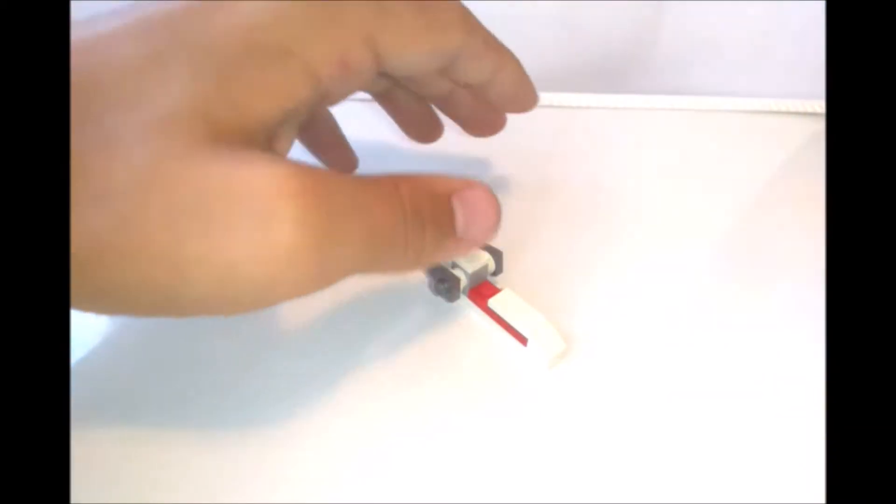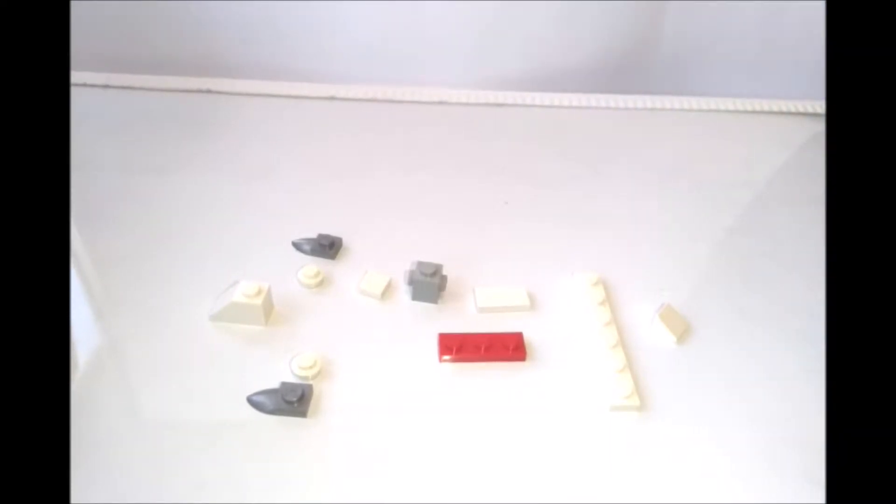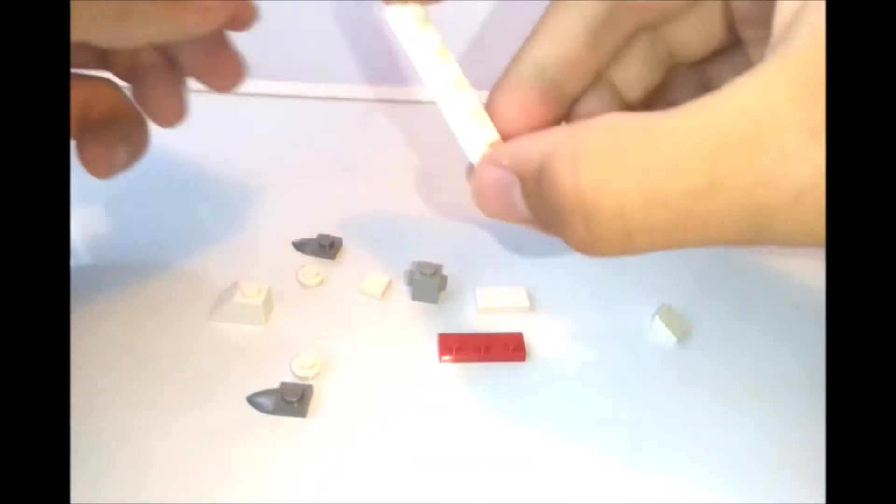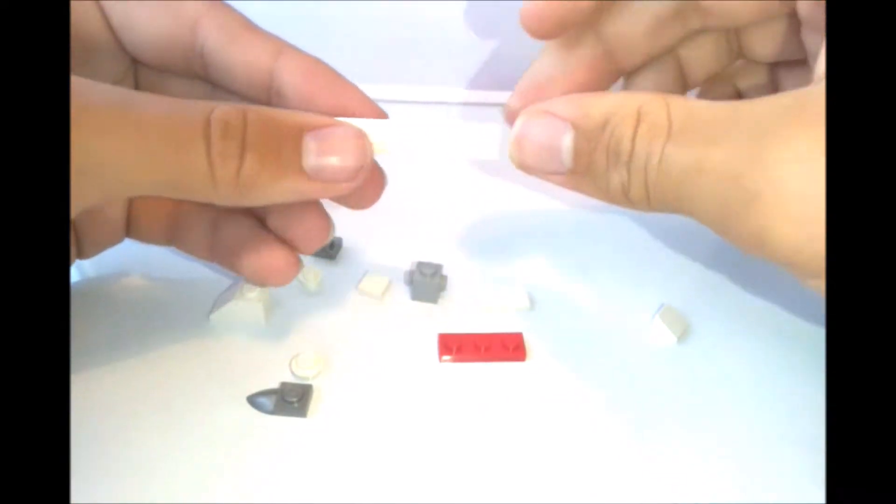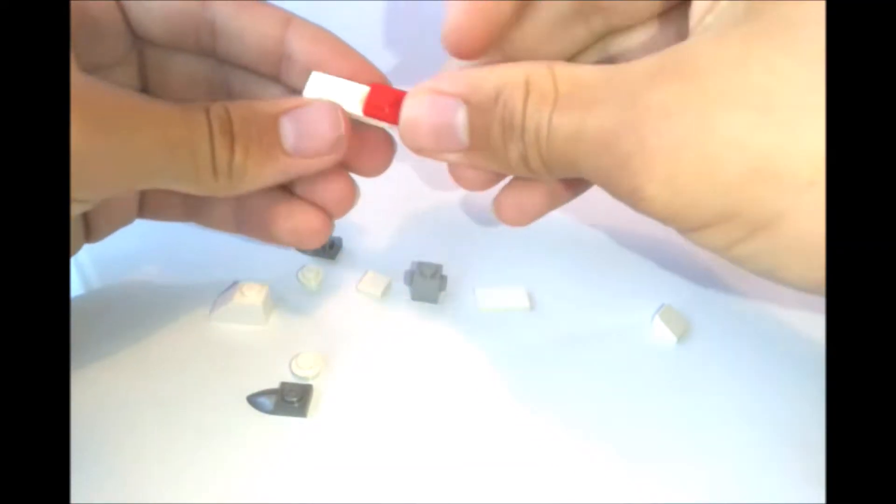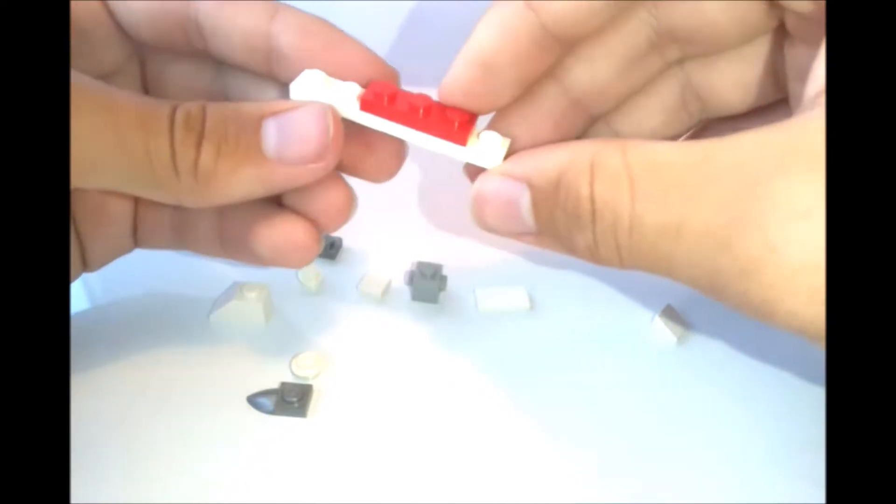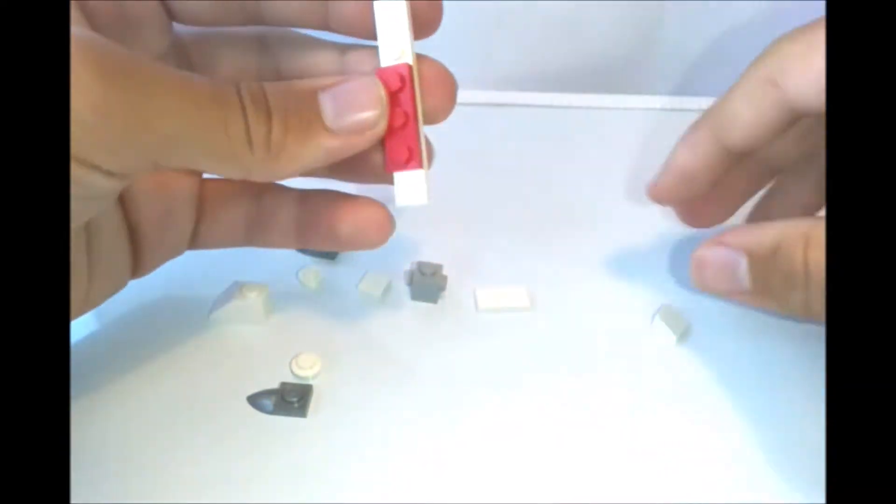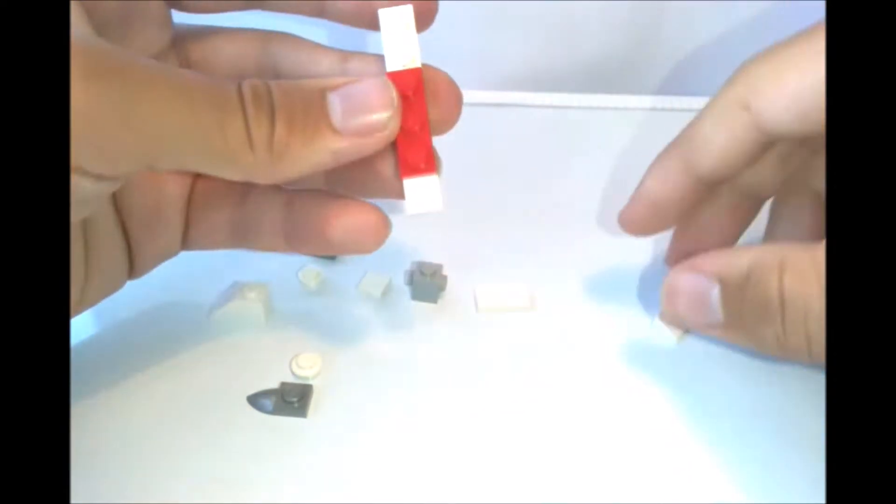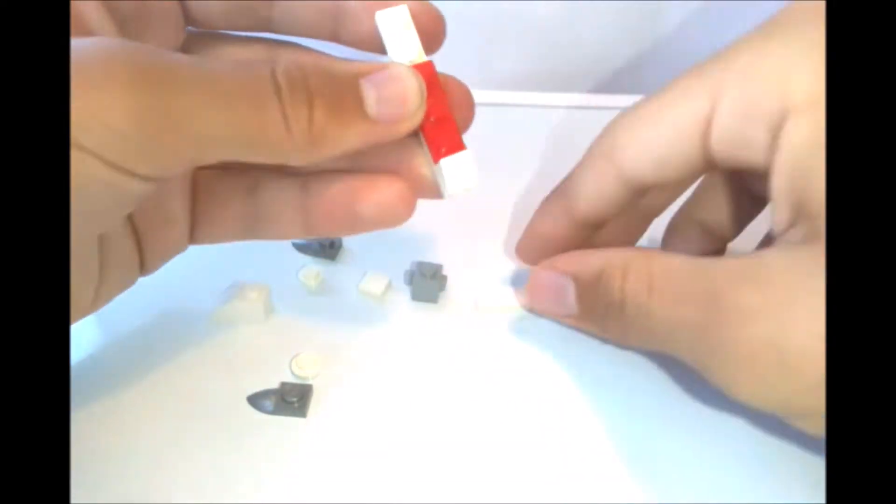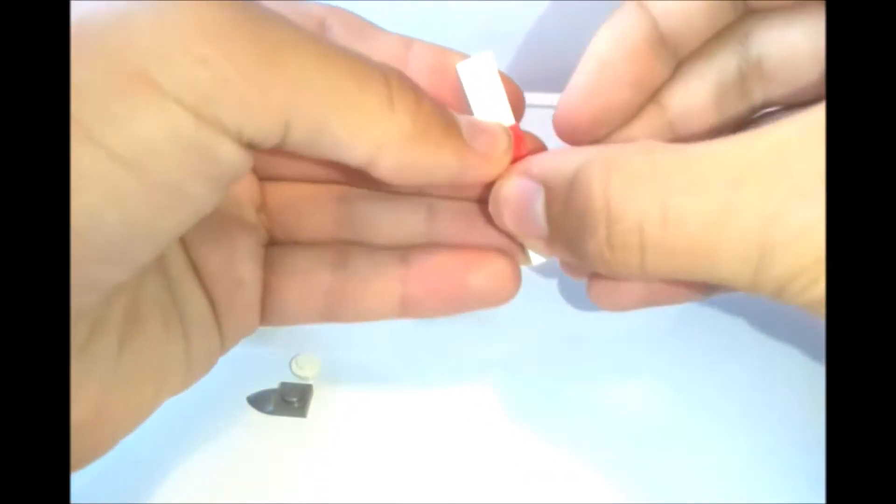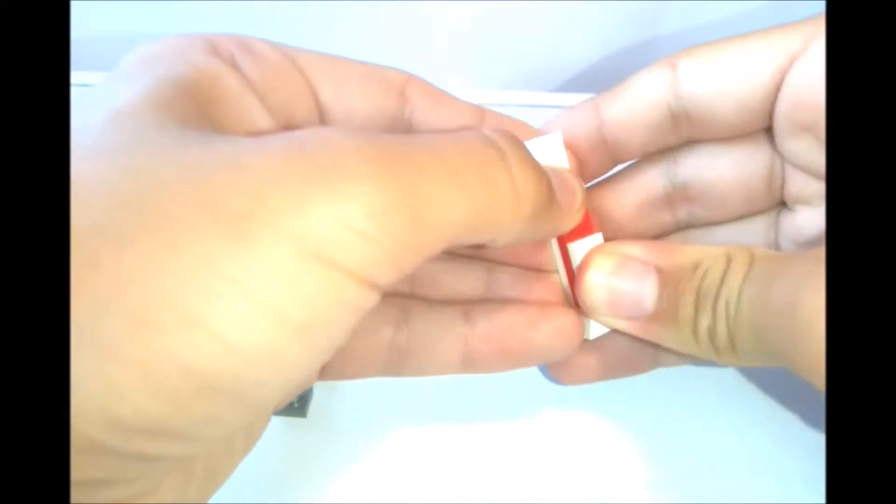This build consists of 11 pieces. We're going to take a 1x6 white plate, we're going to put a red 1x3 plate in the middle with two on one side, one left on the other side which is going to fit a cheese wedge. Then we're going to put a 1x2 tile on the top like so.